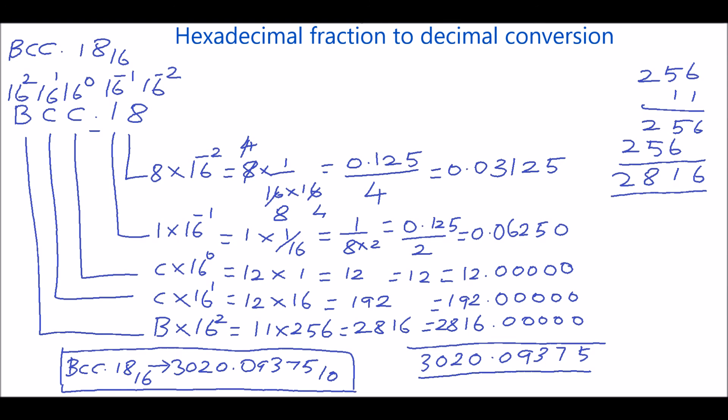To convert a hexadecimal number to its equivalent decimal number: first assign the weight for each digit, then multiply each digit with its corresponding weight, then sum all the multiplication results — that will be the decimal equivalent of the given hexadecimal number. It is very simple. Hope you understand this concept. Thank you.